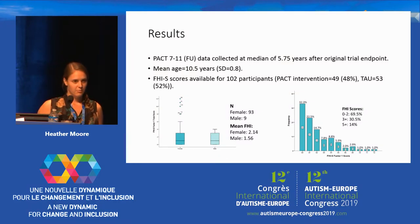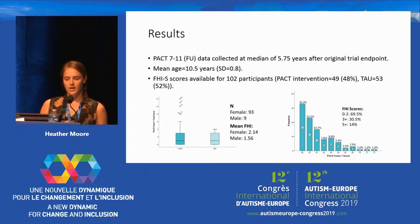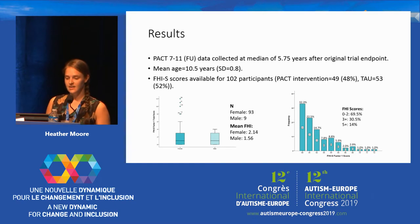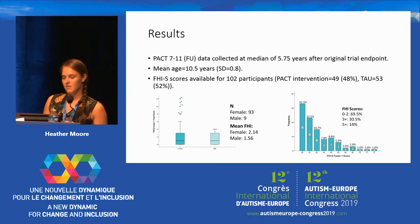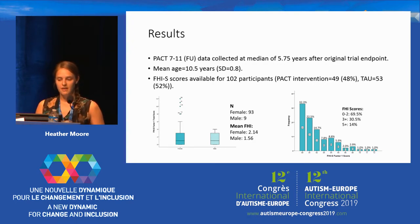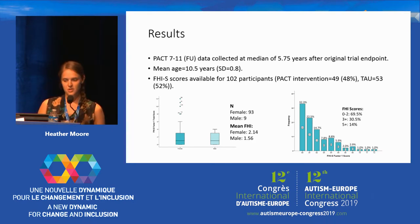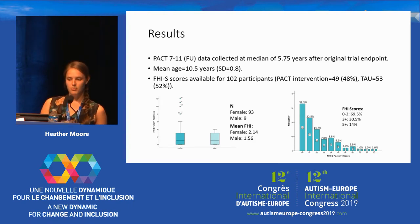The mean age of the children was 10.5 years at follow-up. Looking at the parent characteristics, 93 of the parents were female and 9 were male in this study. Looking at the distribution of FHI scores, it's quite a skewed distribution with the majority of parents showing little evidence for the broader autism phenotype in this study.